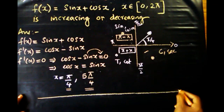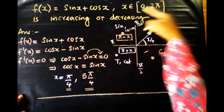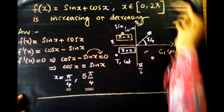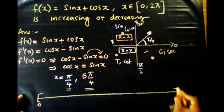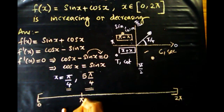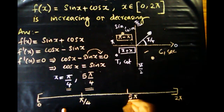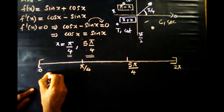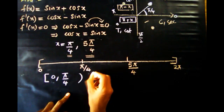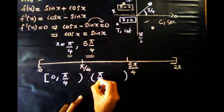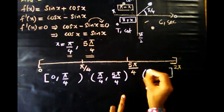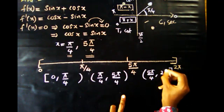We write the number line with x from 0 to 2 pi (closed interval). The critical points are pi by 4 and 5 pi by 4, giving three intervals: closed-open [0, pi/4], open interval (pi/4, 5pi/4), and open-closed (5pi/4, 2pi].